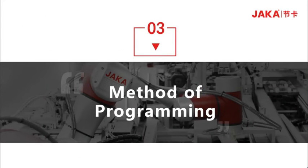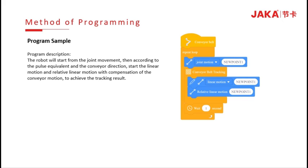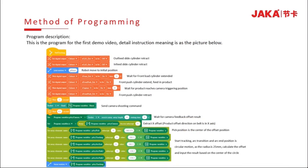Method of programming. The sample program is shown in the right picture. The robot will start from joint movement, then according to the pulse equivalent and the conveyor direction, starts the linear motion and relative linear motion with compensation for the conveyor motion to achieve the tracking result, then waits one second to repeat the motion. This is the program for the first demo video.